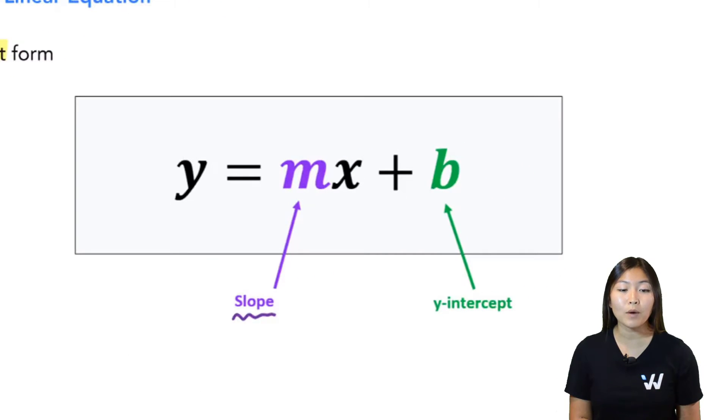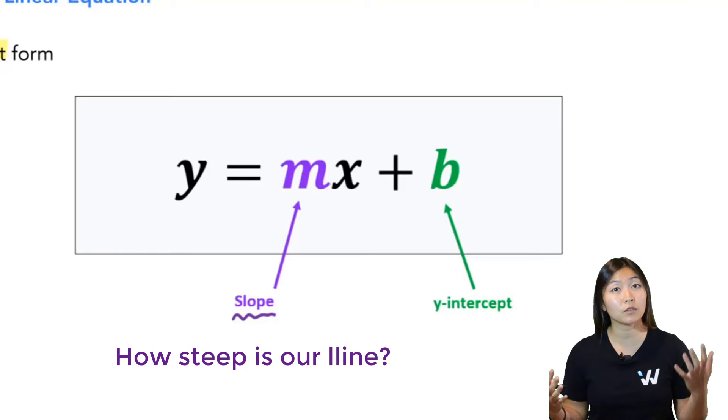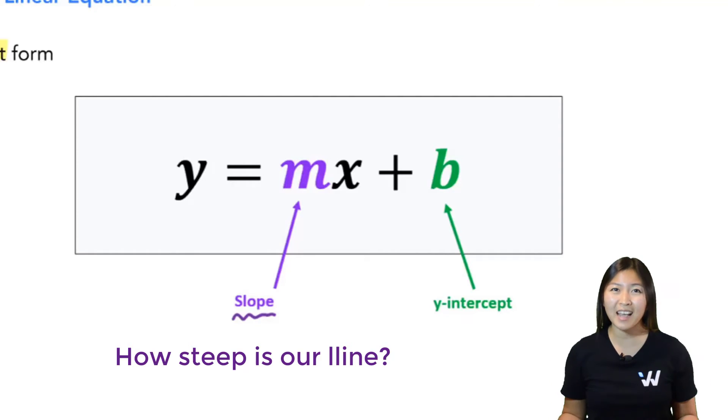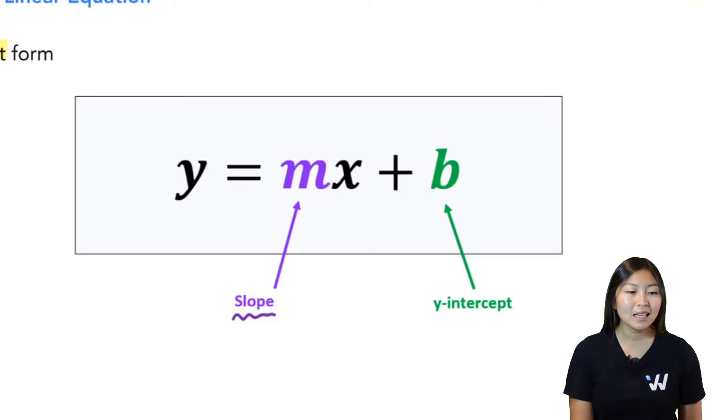The number in the m spot represents the slope. It tells you how steep the line is. If m is positive, we have a positive slope, meaning that your line is going to look like this. If m is negative, that means you're going to have a negative slope. Your line is going to look like this.